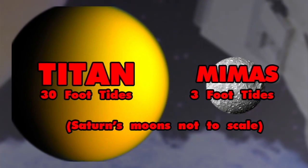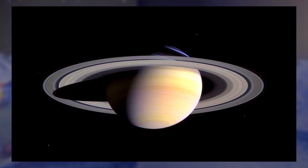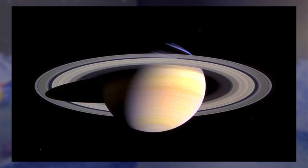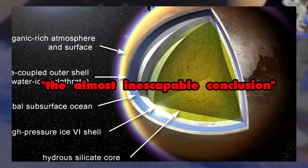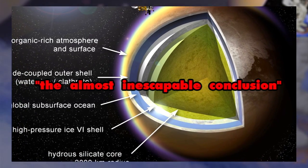Ten times greater than those expected on a rocky satellite, the distortions from the ringed planet's tremendous gravitational pull has led researchers to, quote, the almost inescapable conclusion that there is liquid water at depth on the giant moon.